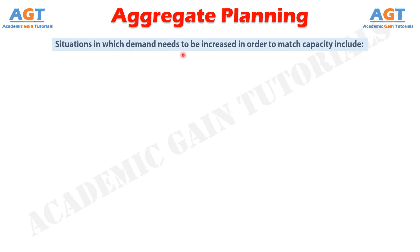Options for situations in which demand needs to be increased in order to match capacity include: Number 1, Pricing — which includes varying pricing to increase demand in periods when demand is less than peak, for example, matinee prices for movie theaters, off-season rates for hotels, weekend rates for telephone service, and pricing for items that experience seasonal demand. Number 2, Promotion — which includes advertising, direct marketing, and other forms of promotion used to shift demand. Number 3, Back Ordering — by postponing delivery on current orders, demand is shifted to periods when capacity is not fully utilized. This is really just a form of smoothing demand. Service industries are able to smooth demand by taking reservations or by making appointments in an attempt to avoid walk-in customers. Some refer to this as partitioning demand.